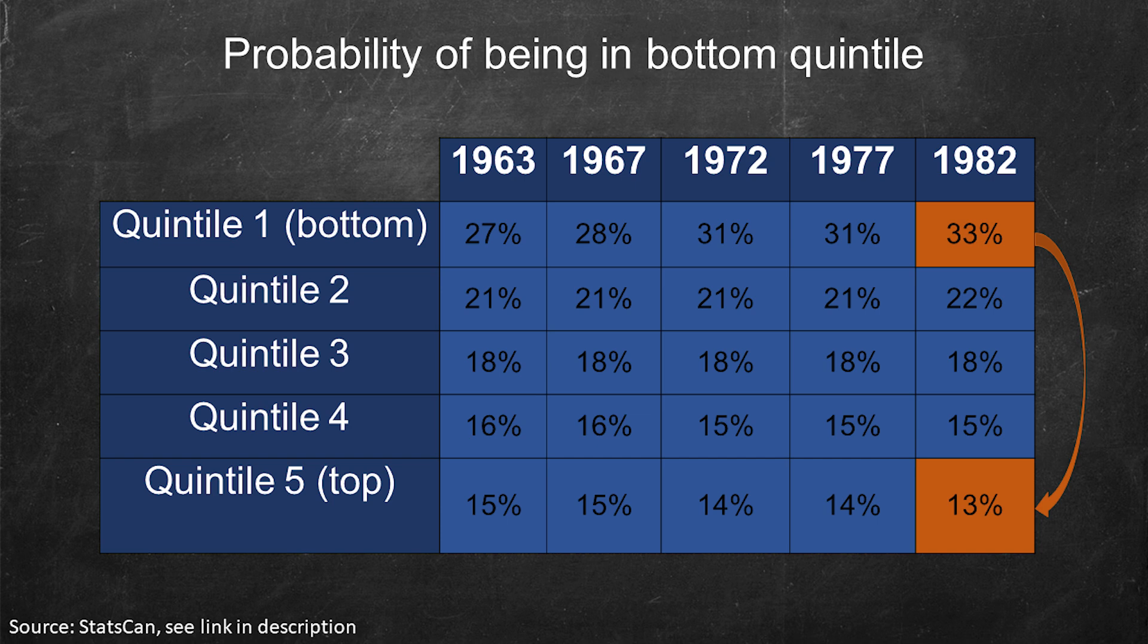That is, you're two and a half times more likely to end up in the bottom 20 percent if your parents were born poor than if they were born rich. And indeed, this measure has gotten worse as time has gone on. It's still not great, but back in 1963, it was only a 27 percent chance, not a 33 percent chance, to end up in the bottom 20 percent if your parents were born in the bottom 20 percent. Alright, so that is intergenerational income immobility.